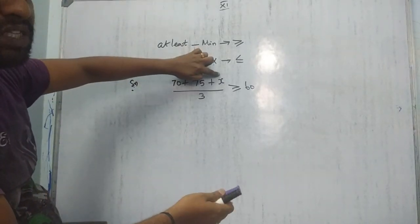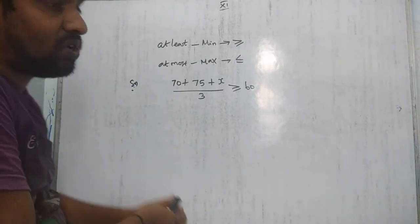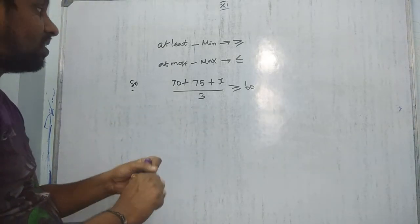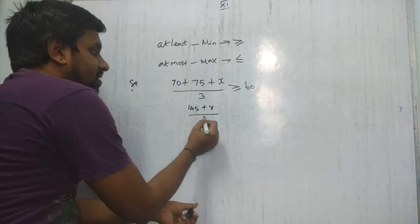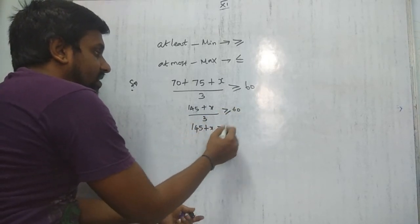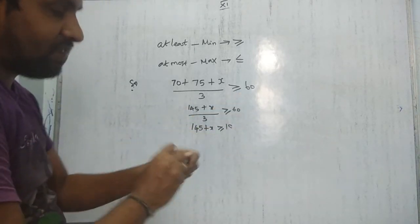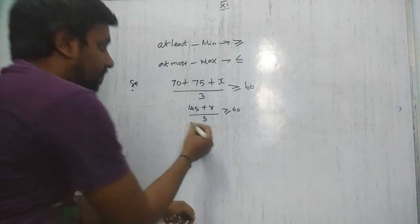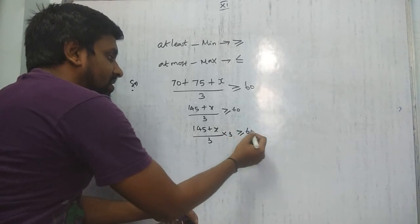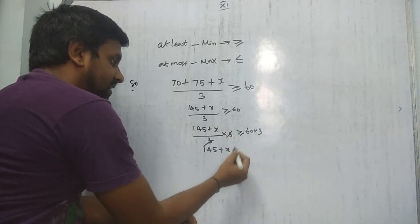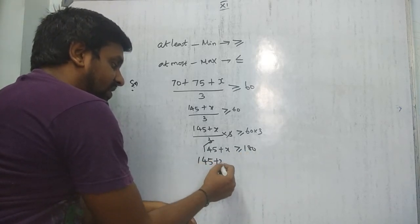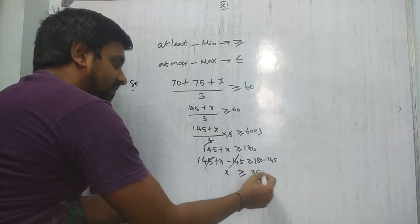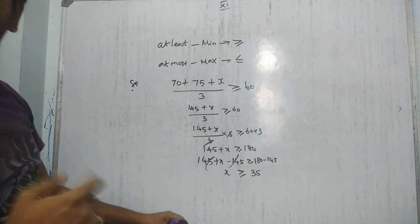Now solve: multiply both sides by 3 (since 3 is positive, inequality stays the same): 145 + x ≥ 180. Subtract 145 from both sides: x ≥ 35. Therefore, Ravi must obtain a minimum of 35 marks in the third test. Remember to balance equations — do not use the cross-multiplication shortcut in this chapter.